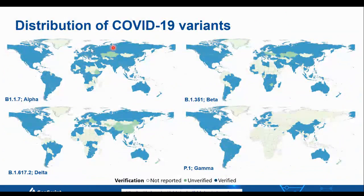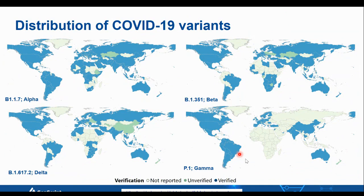Despite progress in providing targeted therapies and vaccines, SARS-CoV-2 is still rapidly mutating, increasing its transmissibility and the severity of disease. Four major mutant variants have been identified to date: B.1.1.7 (Alpha), B.1.351 (Beta), P.1 (Gamma), and the most recent B.1.617.2 (Delta). Due to their high virulence, such strains have spread rapidly to many other parts of the world.